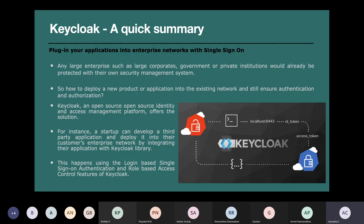You authenticate yourself to some identity management service. It can be the corporate security network, Google, or Facebook — whoever is going to verify your credentials. When you send your packet with all your credentials, they send back an access token saying you are a genuine user. Hereafter, all your interactions with the enterprise network will use this access token. You don't have to pass on your credentials every time. The access token is like a key to enter into the network of your enterprise customer.